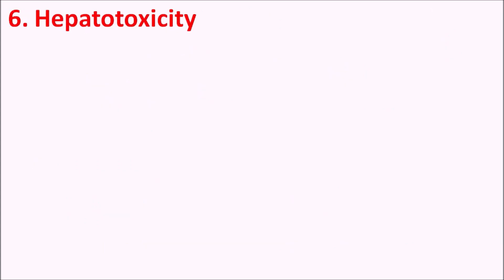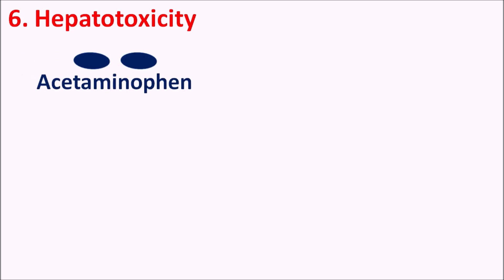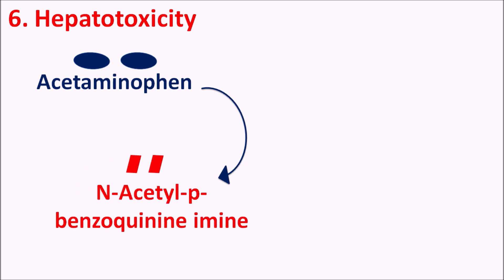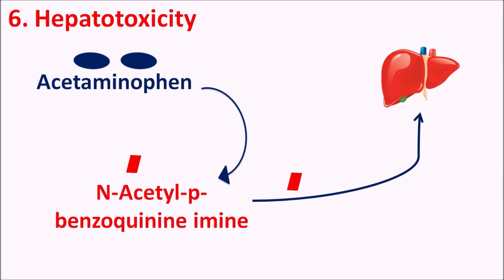The sixth side effect is hepatotoxicity. Some NSAIDs such as acetaminophen (paracetamol) can be converted into toxic metabolites such as N-acetyl-para-benzoquinoneimine (NAPQI) via cytochrome P450 metabolism. This metabolite can affect the liver and produce hepatotoxicity due to depletion of free thiol groups.